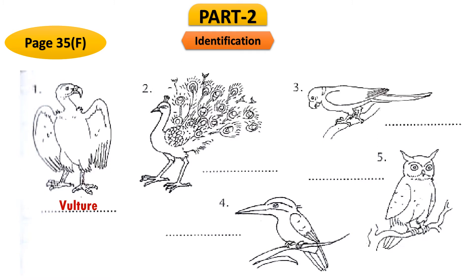Number two is a very beautiful bird known as peacock. Number three is also familiar to us because we can see this kind of bird in our locality — the name is parrot. Number four is a beautiful bird with a variety of colors in its body, and its name is kingfisher.